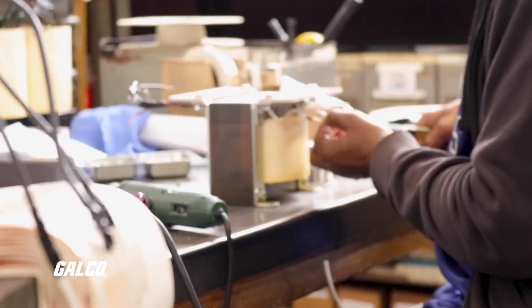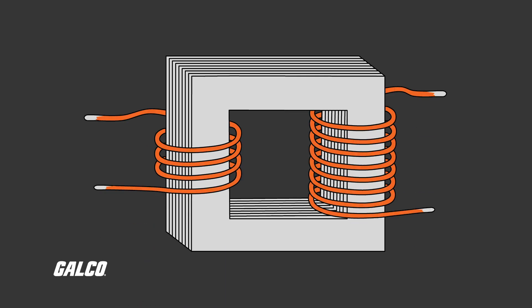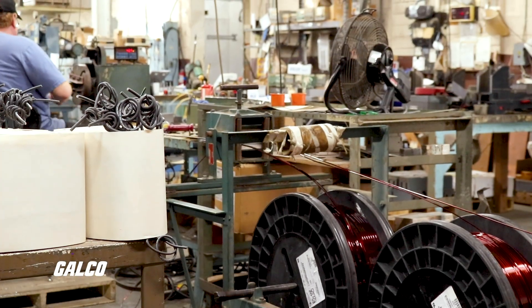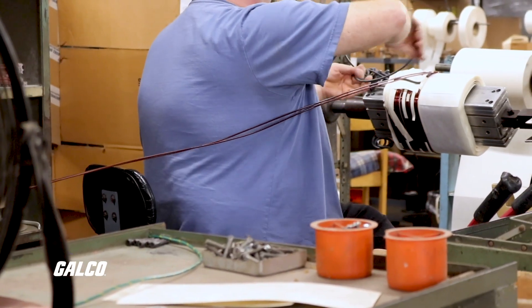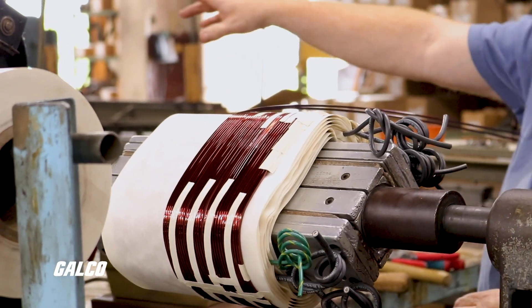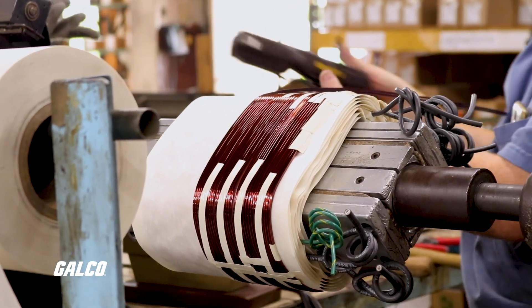Current transformers are built like any other transformer, with primary and secondary windings and a core. Current that passes through the primary winding is proportionally transformed through induction into the secondary winding before it supplies the instrument circuit. The secondary current value is more useful for low voltage applications.